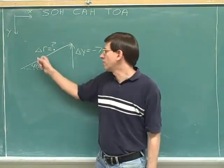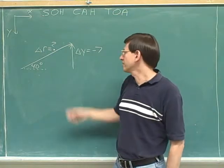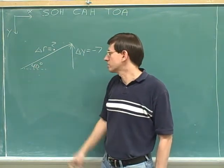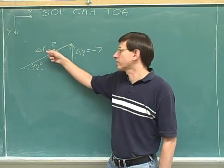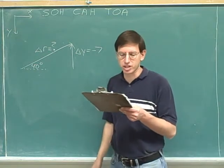Here's our next problem. Here's the overall vector, delta r. But you can see I'm not telling you delta r. I'm only telling you the y component, which is negative 7, and this angle, which is 40 degrees. And as you can see from the question mark, your job is to figure out what delta r is. Please pause the video and give that a shot.